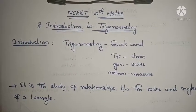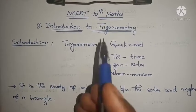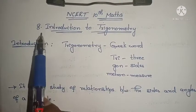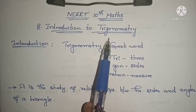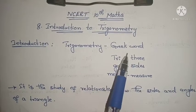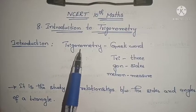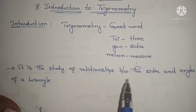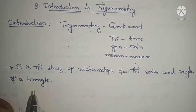Hello, hi, welcome to Parnika Maths. Today we are going to discuss NCERT 10th Maths new chapter 8th chapter: Introduction to Trigonometry. Let us see some introduction about this chapter. Trigonometry is a Greek word. 'Tri' means 3, 'gon' means sides, 'metron' means measure. So trigonometry is a study of relationship between the sides and angles of a triangle.